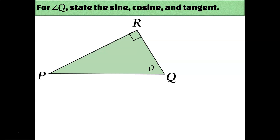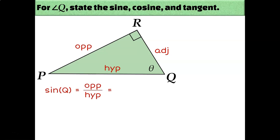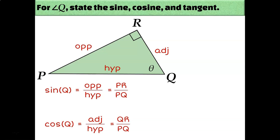The next problem is for you to try on your own. Write the sine, cosine, and tangent of angle theta, angle Q. Pause the video and try it now. The hypotenuse is side PQ, the adjacent side is RQ, and the opposite side is PR. Sine is PR over PQ. Cosine of angle Q is QR over PQ. Tangent is PR over RQ.